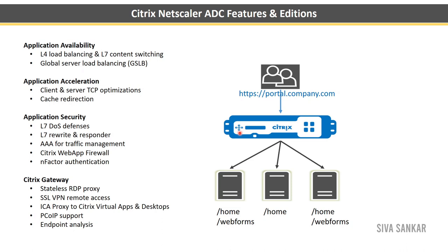Next is application acceleration. NetScaler optimizes TCP traffic from both the client and server side to accelerate performance. The second part is cache redirection — instead of keeping cache on web servers, you can host it on the NetScaler itself, things like forms and Java applets, giving your web pages the best performance.